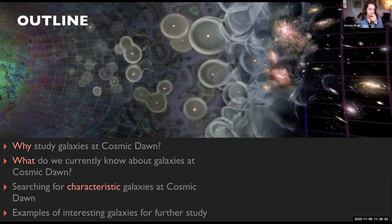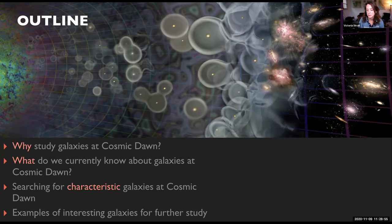I know that there's a lot of expertise here in galaxy evolution, but I'm going to start out with a simple overview to show you where I'm coming from. I'm going to start out with why I'm interested in studying galaxies at cosmic dawn, then go into a little bit about what we currently know, describe my method for searching for characteristic galaxies, and end with a few interesting examples.